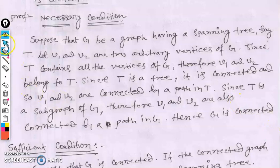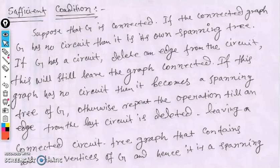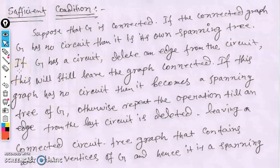Now for the sufficient condition: suppose G is a connected graph. If G has no circuit, then G itself is a spanning tree. But if G is connected and still not a spanning tree, it is because G has a cycle or circuit.